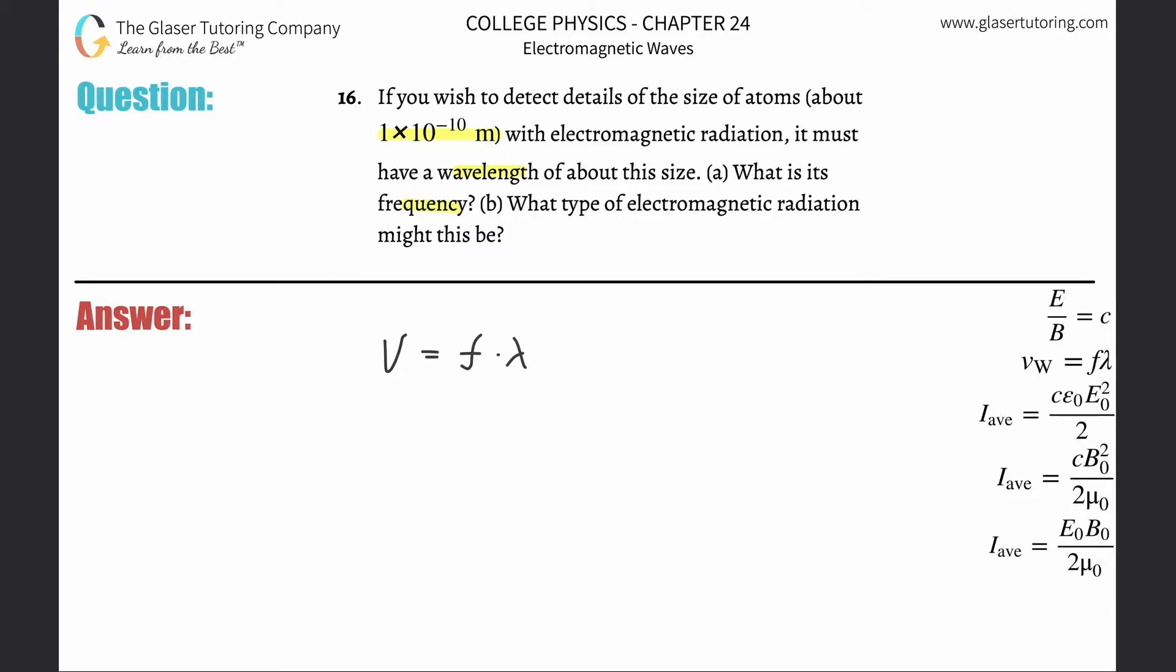In order to find the frequency, I need to divide out the wavelength from both sides. I know the wavelength, they gave it to me, but the question might be, well what the heck is the speed? You've got to remember it's electromagnetic radiation, and the speed of that in a vacuum is going to be 3×10^8, aka the speed of light.